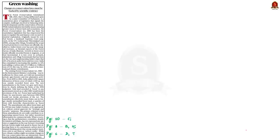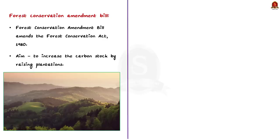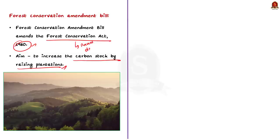This editorial article is about the recent amendments in the Forest Conservation Amendment Bill. Recently, the central government introduced the bill in Lok Sabha. This bill amends the Forest Conservation Act of 1980, whose aim is to increase the carbon stock by raising plantations. The Forest Conservation Act of 1980 was enacted to prevent large-scale deforestation by restricting diversion of forest land for non-forest purposes. Let us now see the key features of the amendment bill by comparing it with the original act.